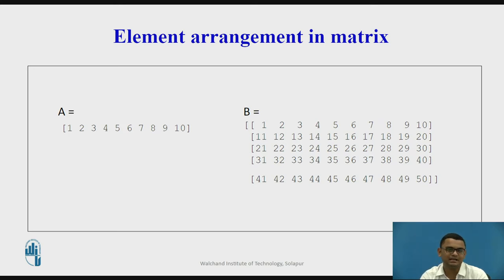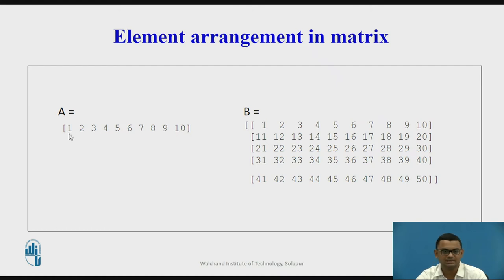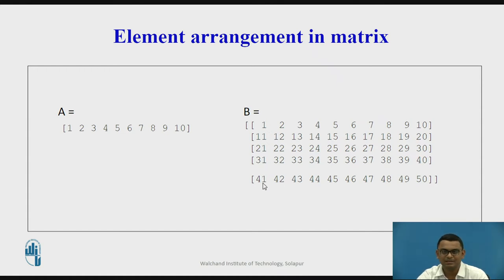Element arrangement in a matrix is as shown on the slide. A one-dimensional matrix is represented by one row and n columns — here n equals 10, so the number of columns is 10. Similarly, a two-dimensional array has 10 columns and 5 rows. When coding in Python, you will come across axes where axis 0 refers to rows and axis 1 refers to columns.